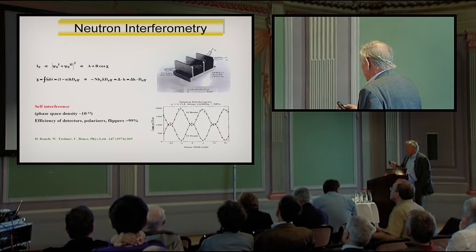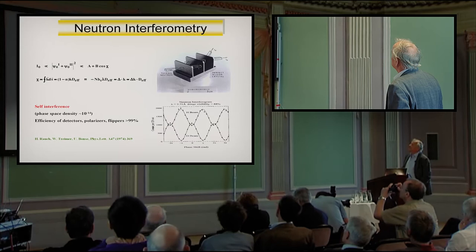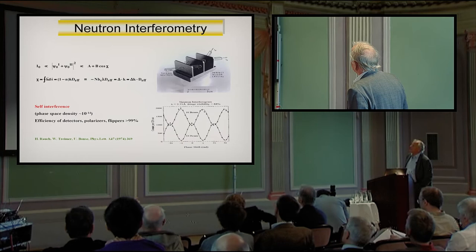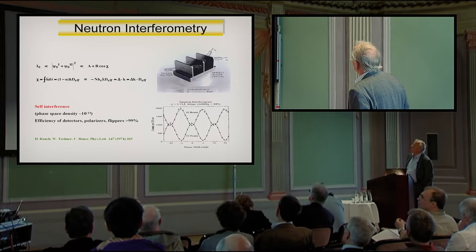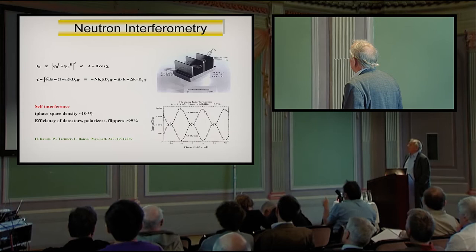We are working mainly with the neutron interferometer. It's a perfect silicon crystal where the lattice planes have to be parallel throughout the crystal, distance of about ten centimeters. Then you get, by diffraction and splitting of the beam and superposition, the outgoing beams show typical interference phenomena when you produce a phase shift, either by materials or magnetic fields, gravitational fields, and so on.